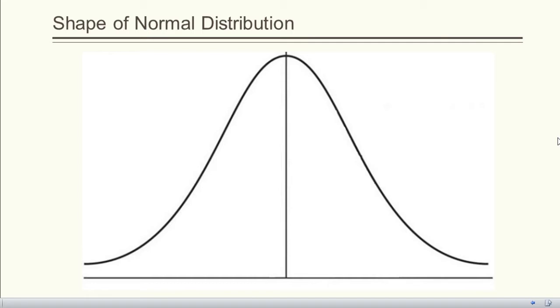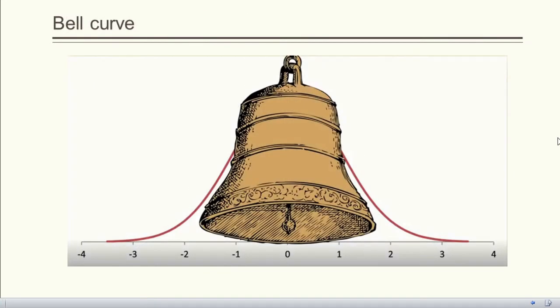If we plot the values of the random variable on the x-axis and the corresponding frequency or probability on the y-axis, we get the graph of a distribution. If we plot normal data on a graph, we get a bell-shaped curve. Therefore, this curve — the normal curve — is also called a bell curve.